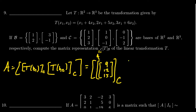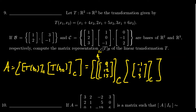For b2 = (3, -1), we get 3 - 4 = -1 for the first coordinate, 6 - 5 = 1 for the second coordinate, and 9 - 6 = 3 for the third coordinate. So T(b2) = (-1, 1, 3), and we need to put this into C coordinates as well.